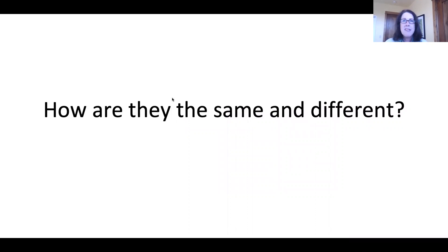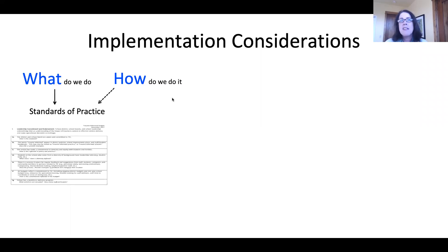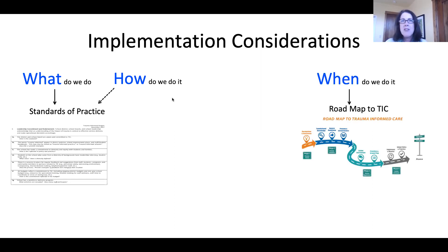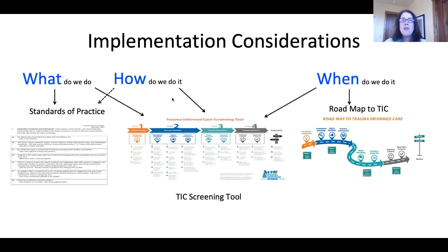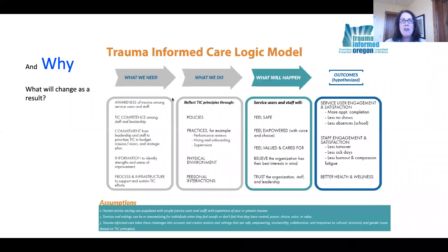Now that I've talked about each of the tools separately, let's talk about how they are the same and how they are different. Each of the tools answers one, two, or three aspects of the what, when, how, and why regarding TIC implementation. The standards of practice addresses the what we do and the how we do it. The roadmap to TIC addresses the when we do it, giving organizations an idea of the sequence. The TIC screening tool combines all three — the what, the how, and the when. But that still leaves the why.